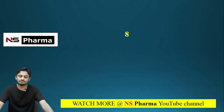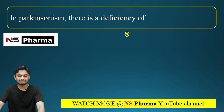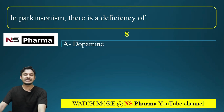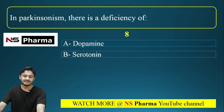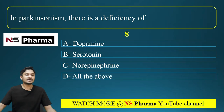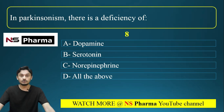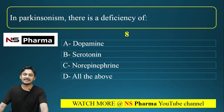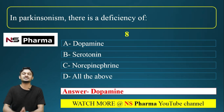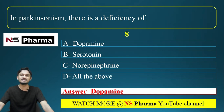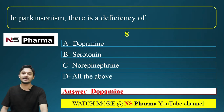Question number eight: In Parkinsonism, there is a deficiency of — Option A, dopamine; Option B, serotonin; Option C, norepinephrine; Option D, all of the above. These are important MCQs you may encounter in pharmacist competitive exams. The correct answer is Option A, dopamine. Dopamine is deficient in Parkinsonism, which is why levodopa is given as treatment.